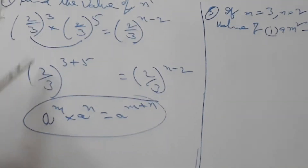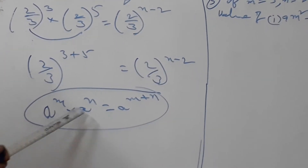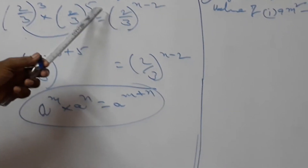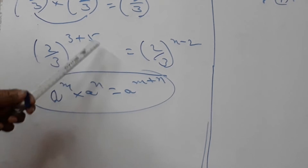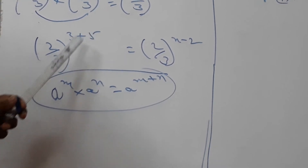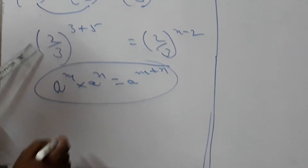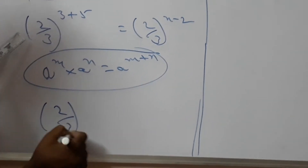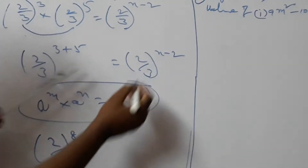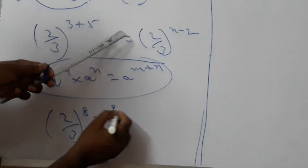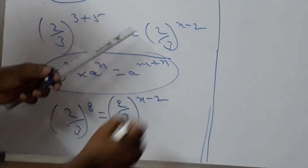Applying the formula — a to the power of m into a to the power of n — where m is 3 and n is 5, giving 3 plus 5. So (2/3) whole to the power of 8 is equal to (2/3) whole to the power of n minus 2.